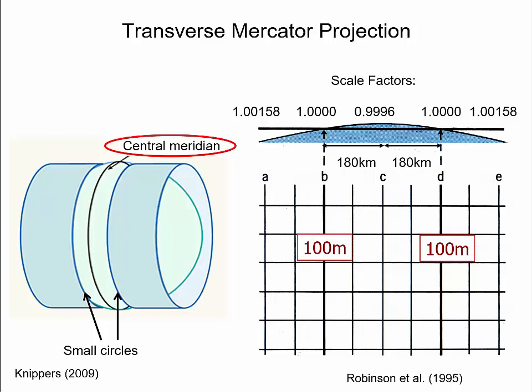Along the center line of each UTM grid zone, the scale factor is 0.9996. This means that the local scale along the map center is smaller than the reference scale and that distances on the map are contracted compared to measurements on the reference ellipsoid. A distance of 100 meters on the ellipsoid would be measured as 99.96 meters on the map.